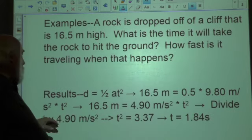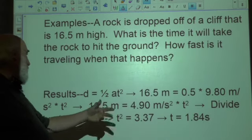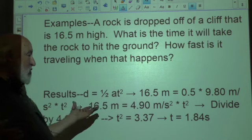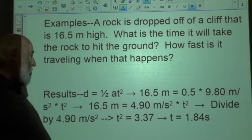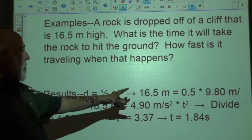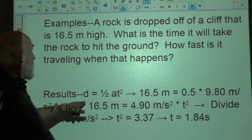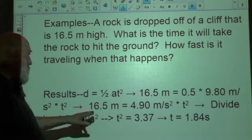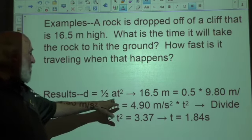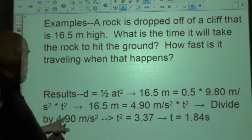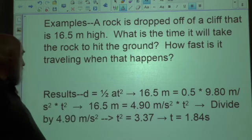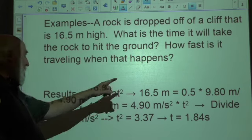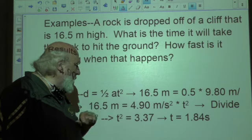Okay? So we know that d = ½at², and that a in this case is g, so we really should have g there. So 16.5 meters is the height of the cliff, so we know that's the distance we're dealing with. One-half is 0.5. A or g is 9.80 meters per second squared times the unknown t². One-half of 9.80 is 4.90.